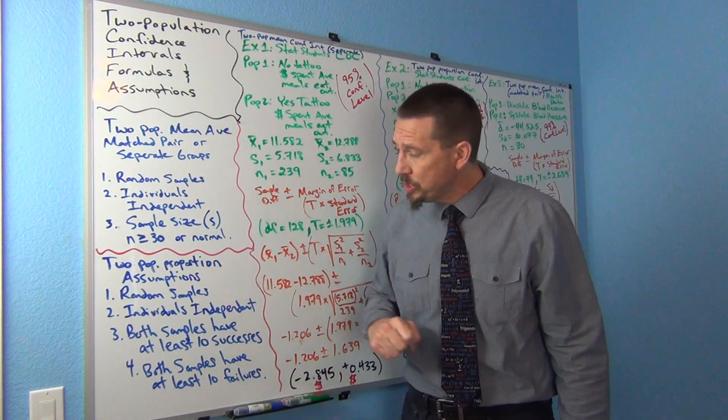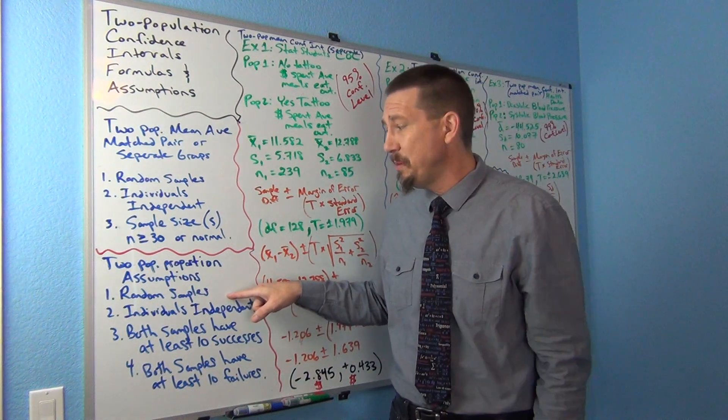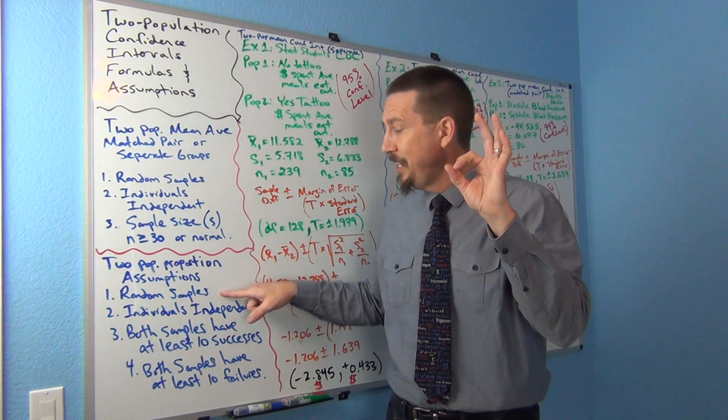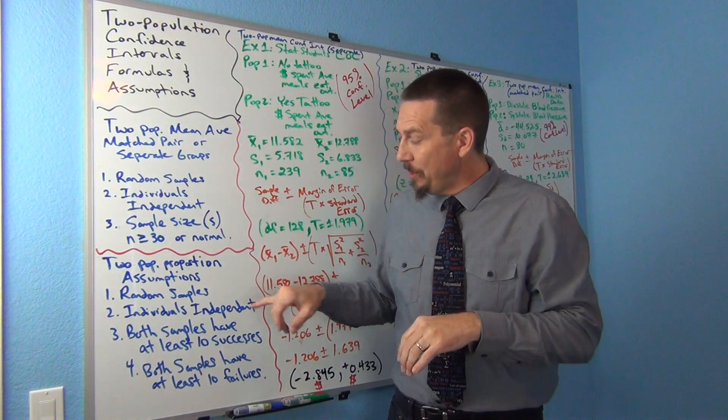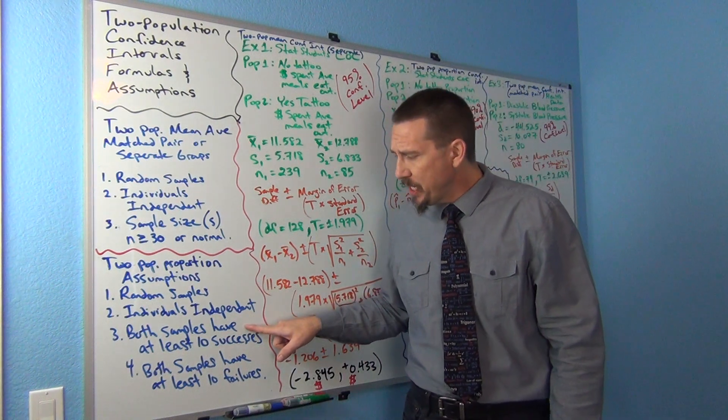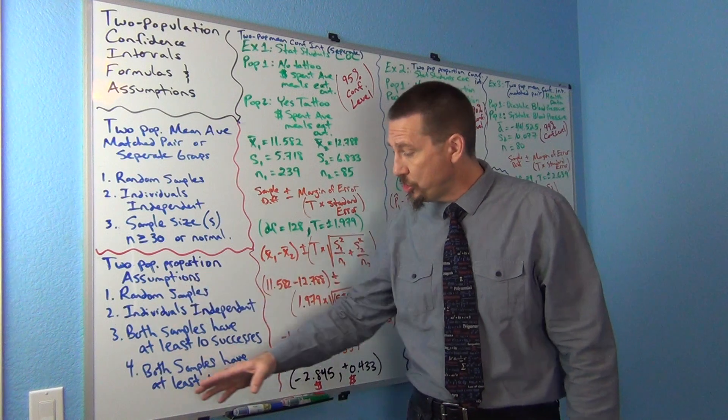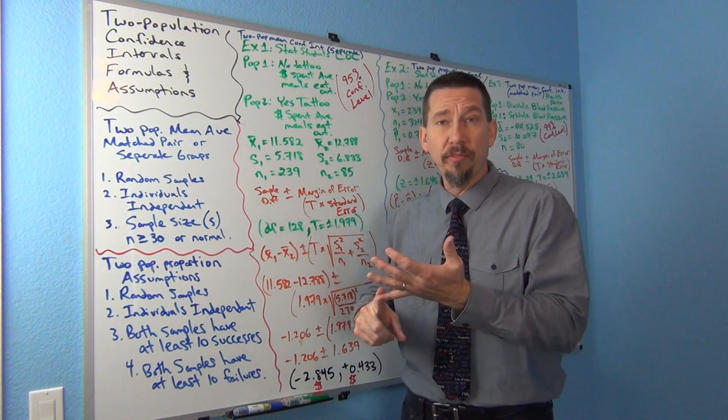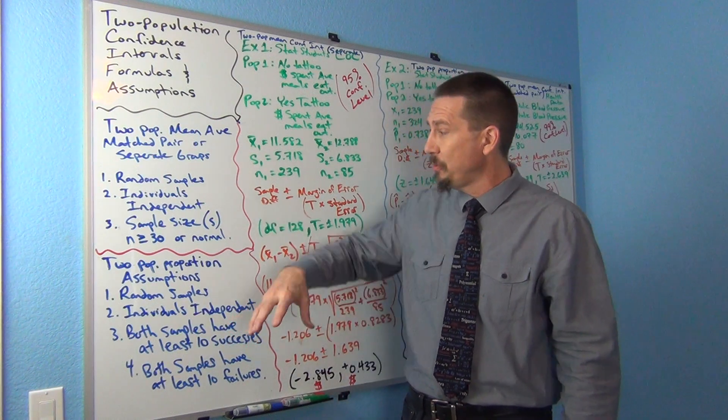Two population proportion assumptions: again we want both samples to be random. We do want individuals within the sample and between the sample to be independent of each other. So you can't do a matched pair with, well you can but it's a little more tricky. For this formula we're doing today, we need our samples to be independent of each other. Both samples should have at least 10 successes and at least 10 failures. Remember that's the same assumptions that we learned before. This kind of ensures that the sampling distribution looks normal and everything lines up with margin of error and these margin of error formulas and the t-scores and the z-scores critical values. So very similar to what we've done before in terms of calculation, now we're just applying it to two population.